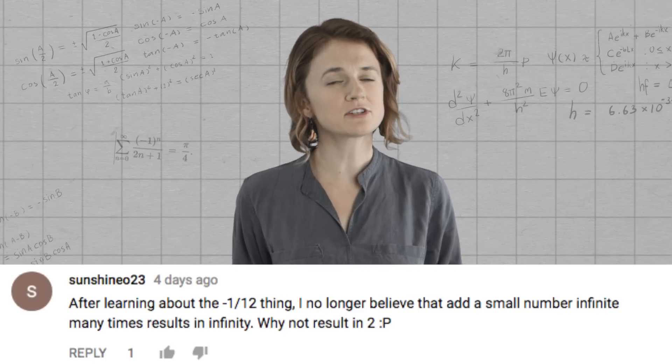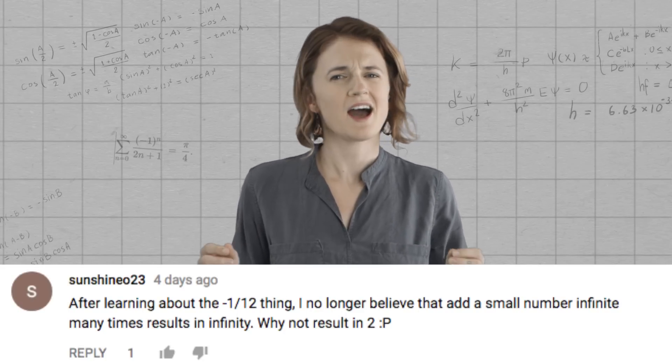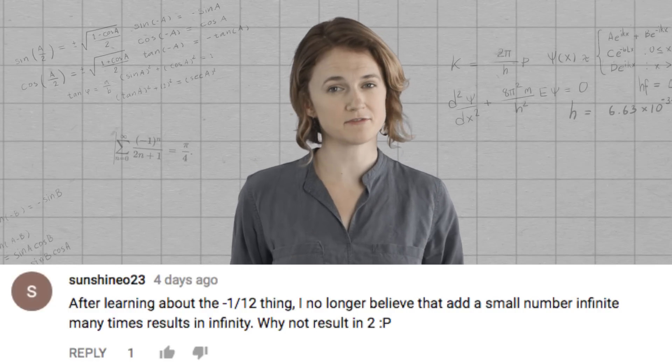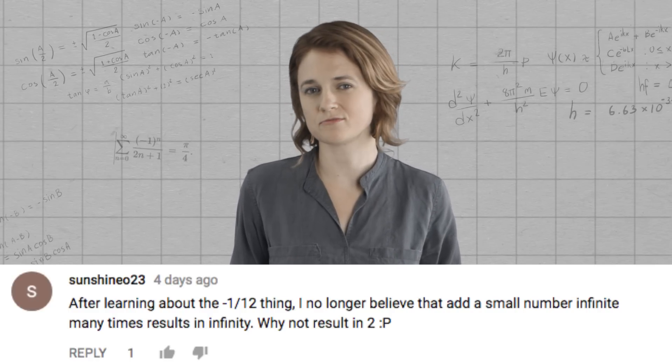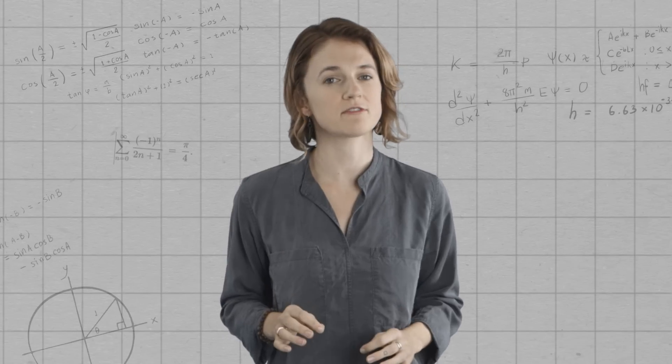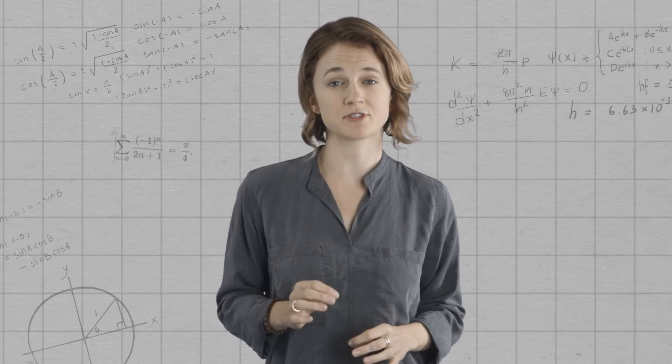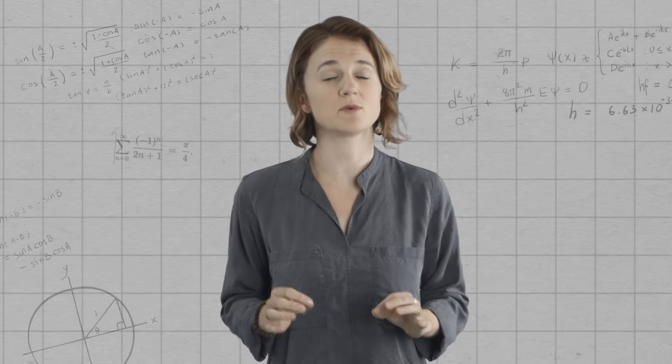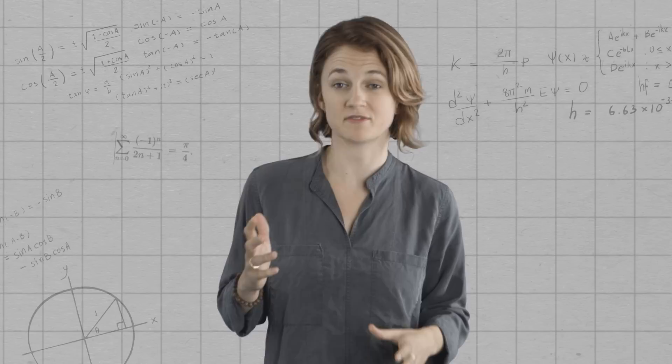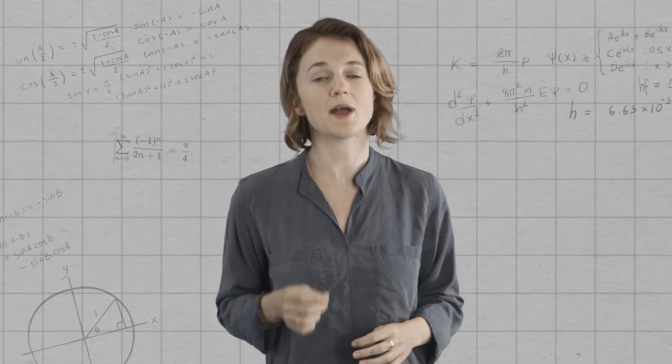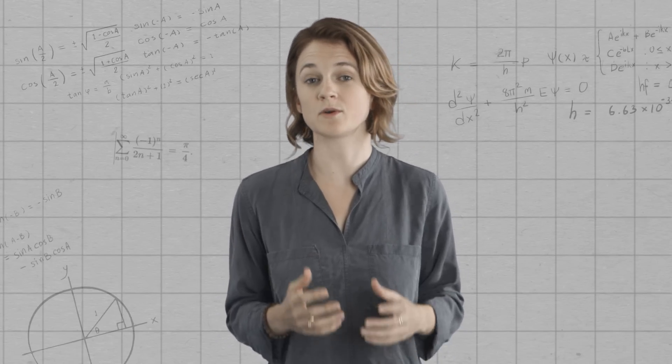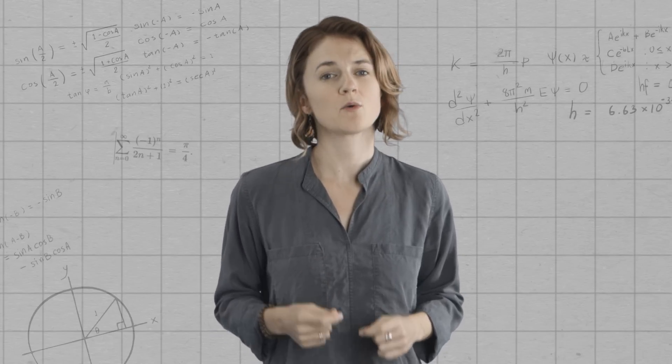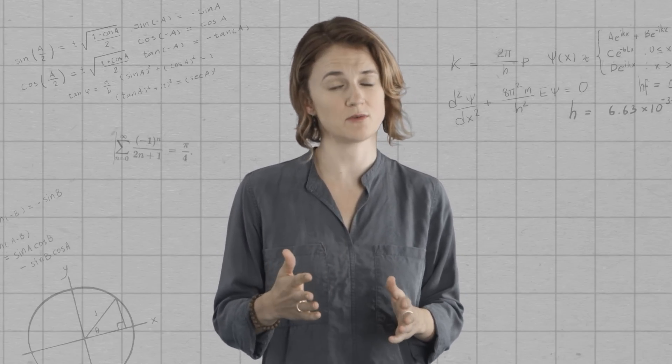SunShiny023 said, After learning about the negative one-twelfth thing, I no longer believe that adding a small number to itself infinitely many times results in infinity. Why can't the result be two? Good question. First off, the idea that the sum of the natural numbers is negative one-twelfth is a highly non-standard way of adding numbers. Typically, one says that the sum diverges to infinity. Let's use the standard method to add a tiny number, like one one-thousandth, to itself infinitely many times.